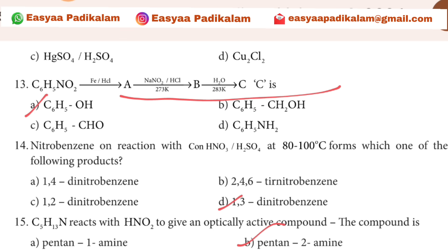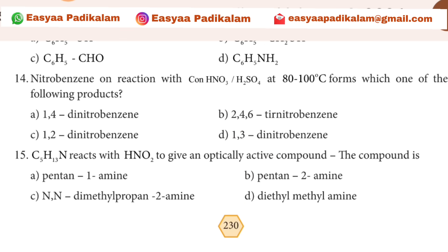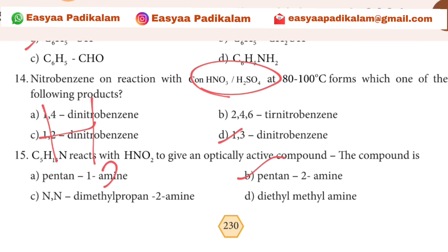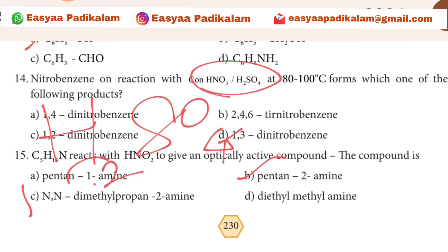The answer is 1,3. What is C6H5OH? What are the effects of H2SO4? Is it 2C6H5OH?